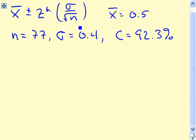So here's our confidence interval formula. We already know x̄, we're told it's 0.5. We know it's a sample of size 77, and we're told that the population has a standard deviation of 0.4. One slight oddity is the confidence level is 92.3%, but it doesn't really matter that much. We can just use Excel to tell us the corresponding z* that goes with this particular confidence level.